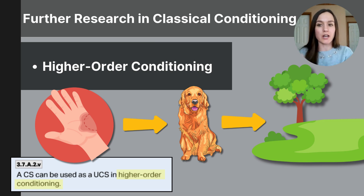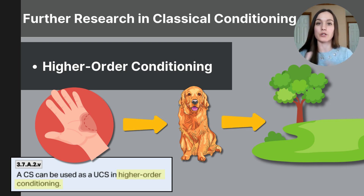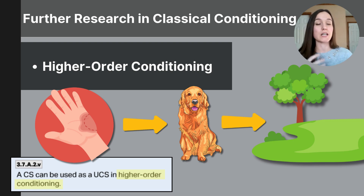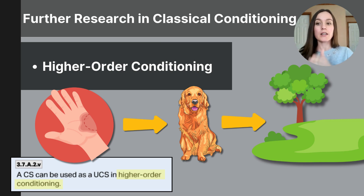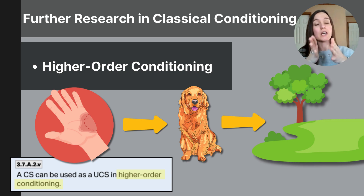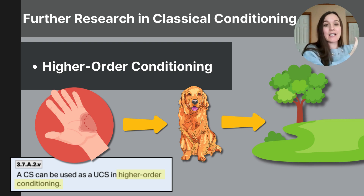For a real world example: suppose a child is classically conditioned to fear dogs because the child was bitten by a dog. The dog bite is the unconditioned stimulus causing fear, the unconditioned response. Over time, the child might develop a fear response to all dogs — that's the first set of conditioning, with dogs as the conditioned stimulus. If the child then starts to fear places where dogs are commonly seen, like a park, the park becomes the second conditioned stimulus. This is higher order conditioning — the park was paired with the dog, which was the initial conditioned stimulus, and the original fear came from being bitten.